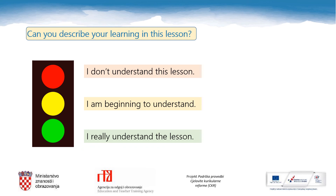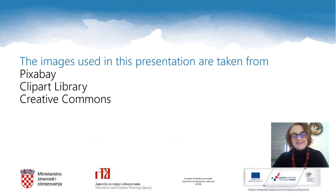We have almost come to the end of this lesson. We have done a lot of work today. Can you describe how you learned this lesson? Let's use traffic lights. Red means that you don't understand this lesson. Yellow means that you are beginning to understand it. And green means that you really understand the lesson. This is the end of today's lesson. I hope you enjoyed it. Until next time, goodbye.